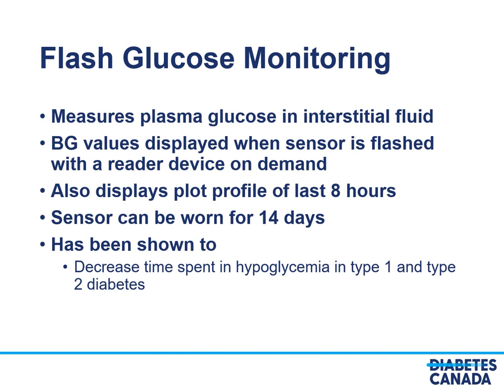Flash glucose monitoring has been recently introduced in Canada, and this too measures plasma glucose in the interstitial fluid. However, the blood glucose values are only displayed when the sensor is flashed with a reader device on demand. Once this has occurred, you will see a plot profile of the last 8 hours. The sensors are worn for 14 days, and evidence shows that flash glucose monitoring can decrease time spent in hypoglycemia in both type 1 and type 2 diabetes.